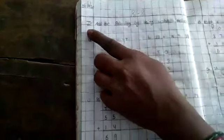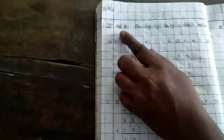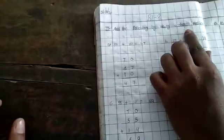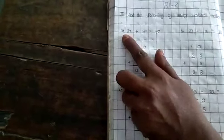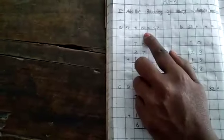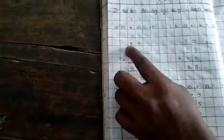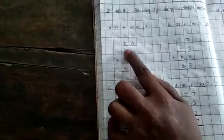Next page. Draw the margin. Write the date. The second bit is add the following by using column method. You have to do in column method. So first word is given to you, 37 plus 10. How much you have to do this?